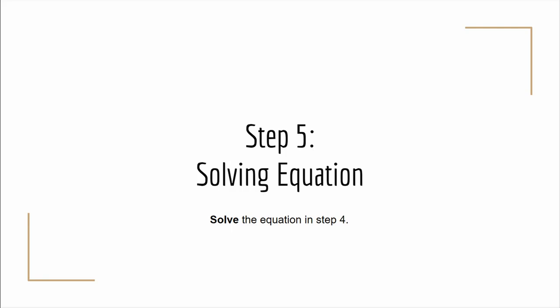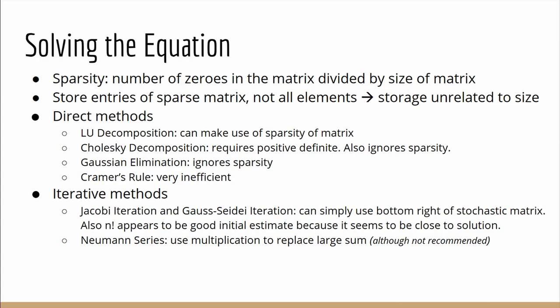Finally we solve the equation. To solve the equation we attempt to make use of the sparsity of the matrix, that is it has a lot of zeros per the size of the matrix. If we can utilize it that means we only need to store the non-zero entries of the matrix and not all of its elements so the storage of it will be not as related to its size as much. We propose two types of methods of solving the problem in general. The first is direct methods, that is we attempt to get the solution directly via the algorithm. We propose that LU decomposition can make use of the sparsity of the matrix as well. And as for Cholesky decomposition we aren't quite sure whether it will work because it requires the matrix to be positive definite but we haven't proved it yet. We also suggested that it may ignore the sparsity of the matrix. For Gaussian elimination and Cramer's rule they obviously work but they will either ignore the sparsity or just be plain inefficient.